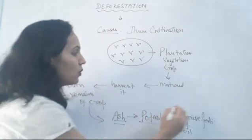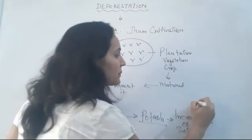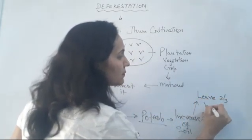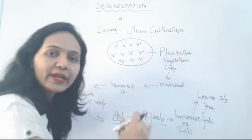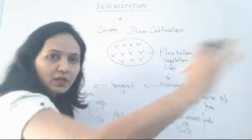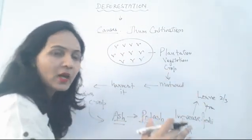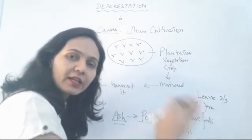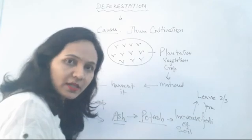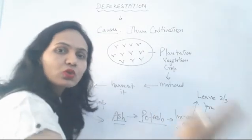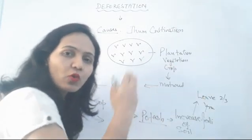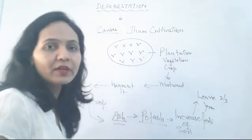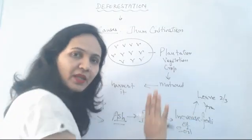After harvesting and burning, these people leave this land for two to three years and move somewhere else. Naturally, that soil will contain fertility. The decomposers will decompose the organic matter and naturally the soil fertility will increase.